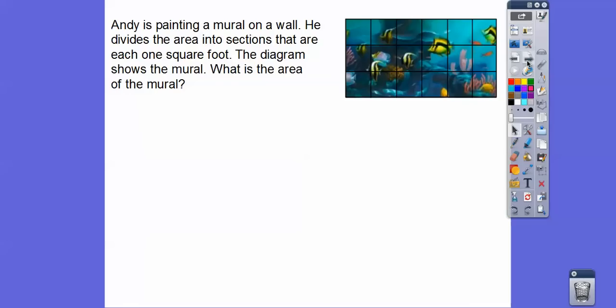So Andy is painting a mural on a wall. He divides the area into sections that are each one square foot. So here's the diagram over here with the square foot. So what is the area of the mural right there? So we're just going to count all those squares right there. So I just did one right here so we can count them. So we can just go through just like the last one. We just start counting.